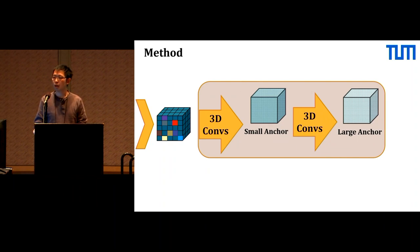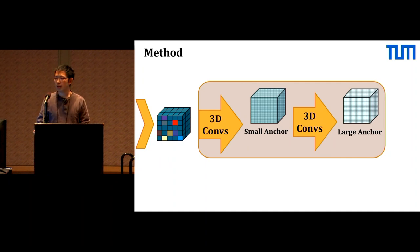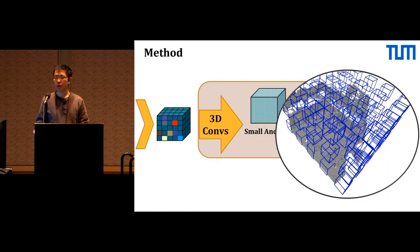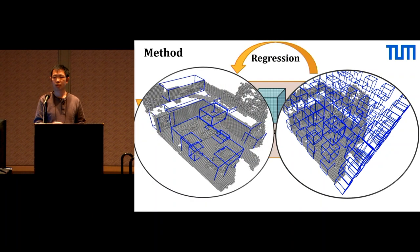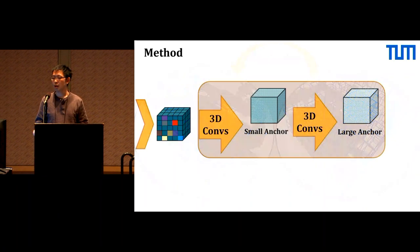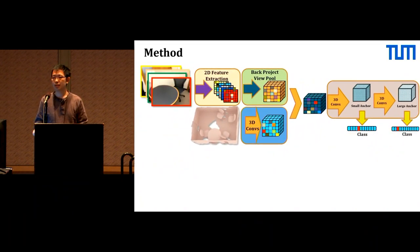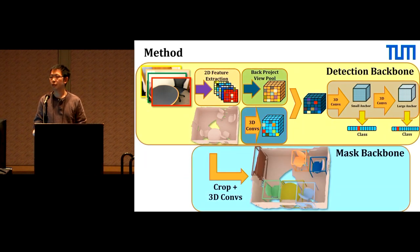This network predicts object locations with an anchor mechanism. A set of predefined anchors are uniformly spread in 3D space, and the network regresses the positive anchors to the target bounding boxes. We can then use the predicted bounding box to crop features for object classification.